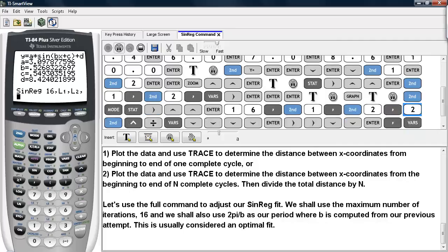And then we're going to do 2 pi. And you can get pi by hitting second and caret key. Divided by b.